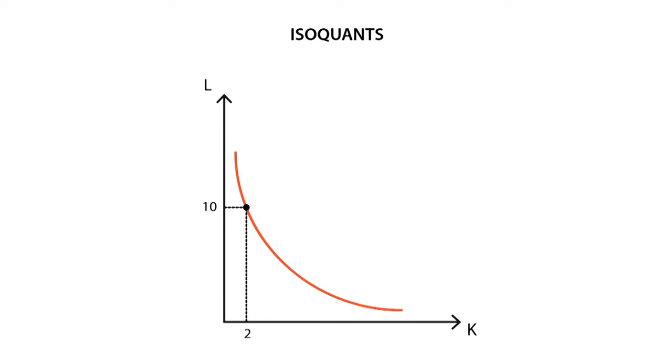For example, at this point we need the opposite quantities for the same level of output. The same quantity is produced, but with a different combination.